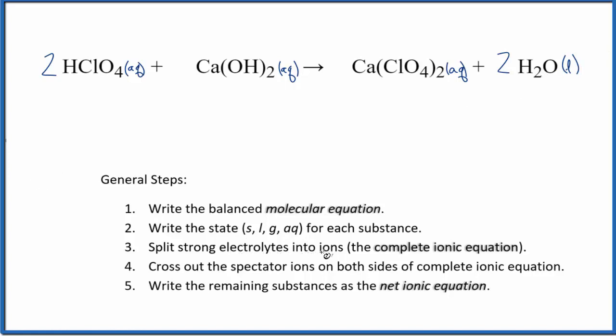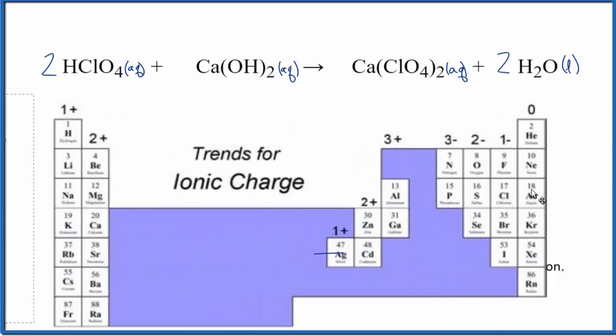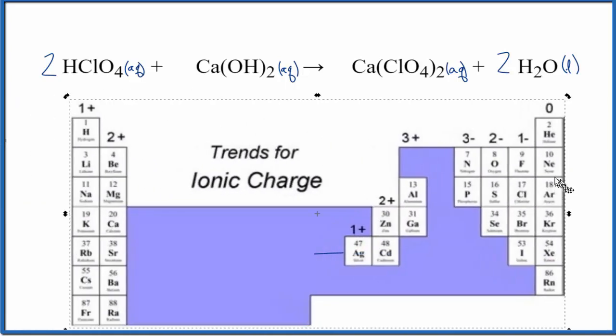Now we're going to split the electrolytes up into their ions. So we need to know the ionic charge for each one of these substances up here. So we could look at the periodic table, and we can see that it's organized here by the charge on the groups.